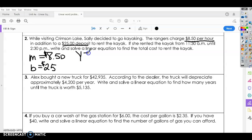So we're going to write y equals mx plus b, just like before. This time our m is $8.50x plus $25 deposit that we pay.